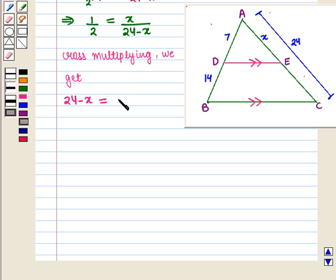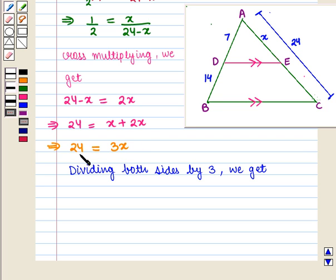This further implies that 24 equals x plus 2x, which means 24 equals 3x.